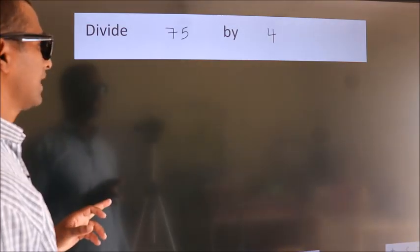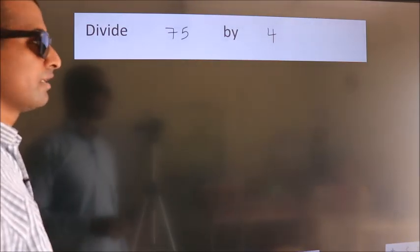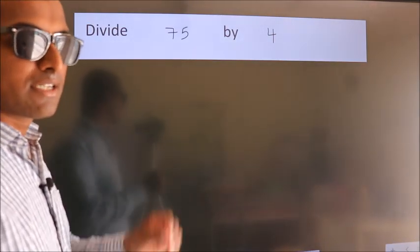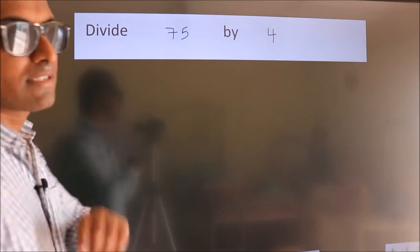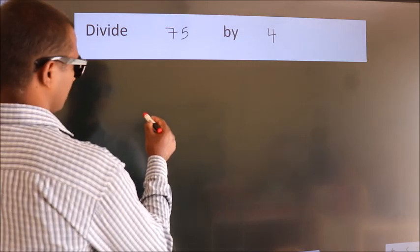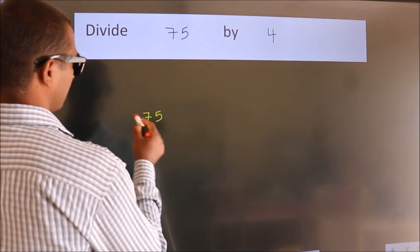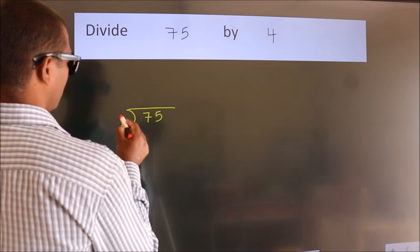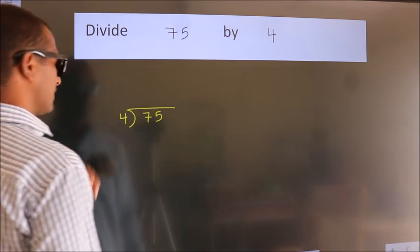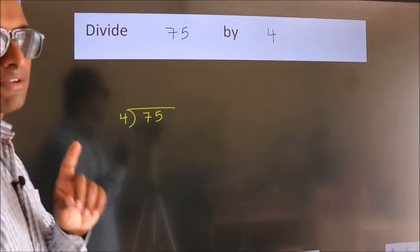Divide 75 by 4. To do this division, we should frame it in this way: 75 here, 4 here. This is your step 1.